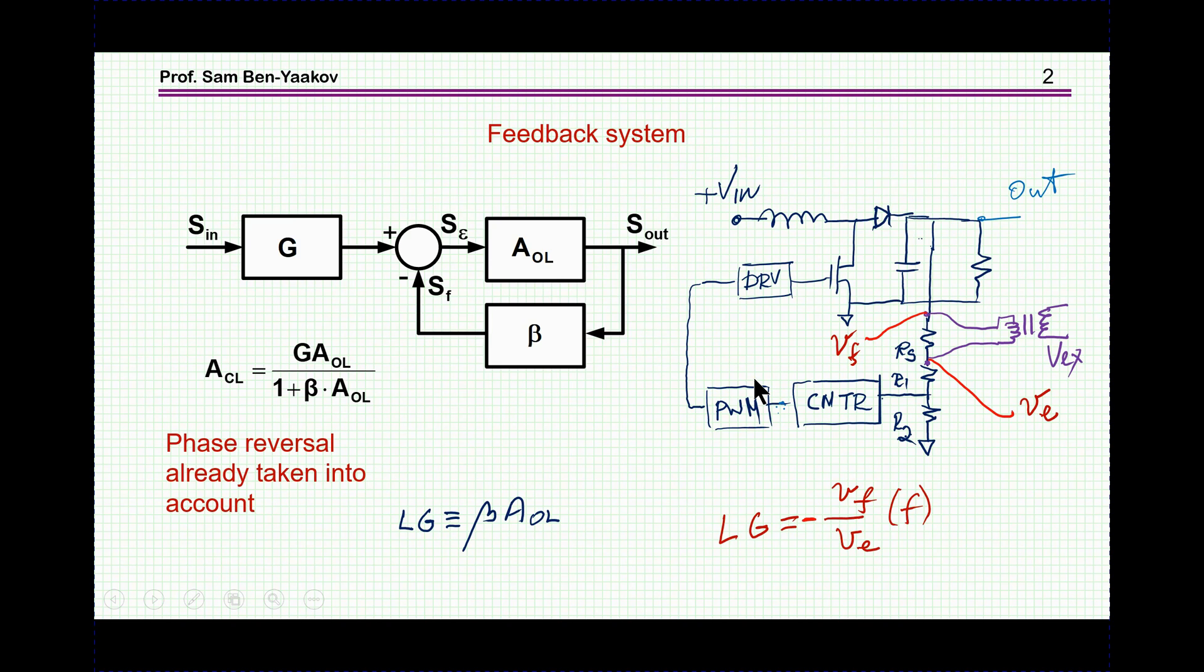Let me start off with just a general description of a feedback system. We have the plant here, we have the feedback, this is the summing junction, and of course the closed loop response from input to output would be this open loop section, and then beta A plus 1, and this product here is of course defined as the loop gain.